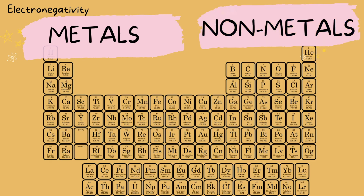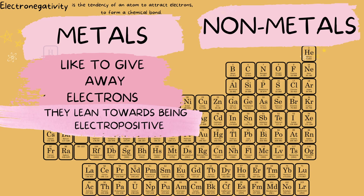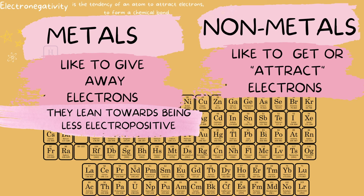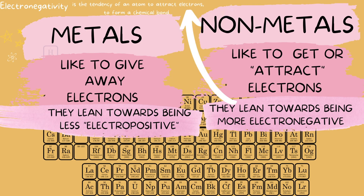One of the characteristics of metals is that they like to give away electrons. Because they like to give away electrons, they lean towards being less electronegative — you can also say they are more electropositive. If we look at the definition again, electronegativity is an atom attracting electrons, so metals do the opposite. Non-metals, on the other hand, like to attract electrons, so they definitely lean towards being more electronegative.